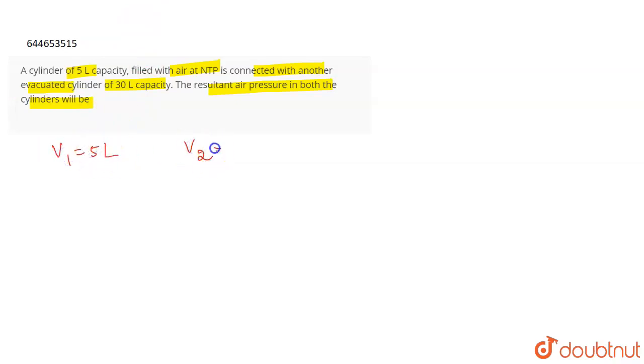liters, right? And the volume V2 will be, now as it is connected with another cylinder of 30 liter, so the volume becomes 30 plus 5, which is 35 liters. Okay, the pressure P1, now at NTP, at NTP the